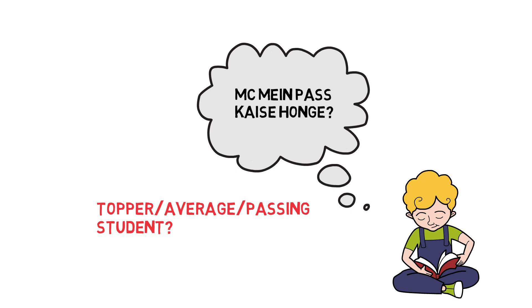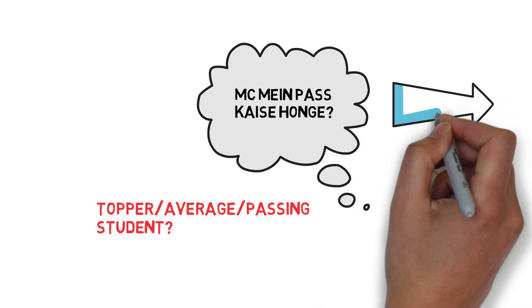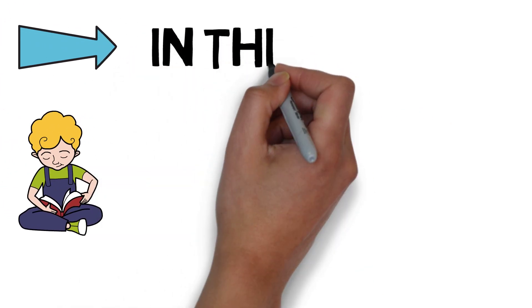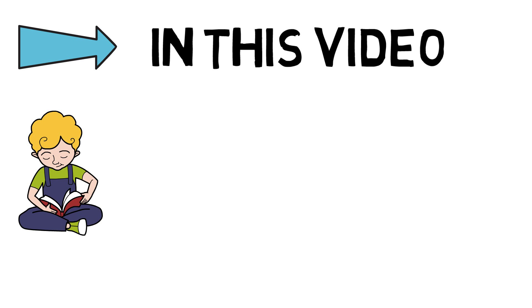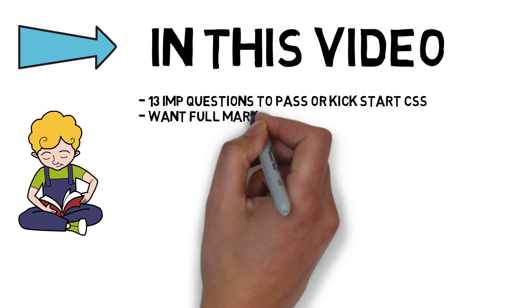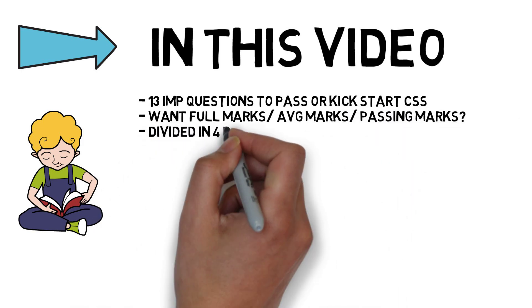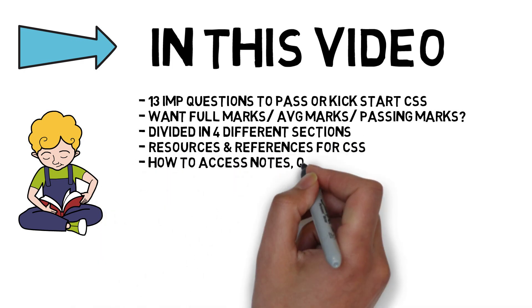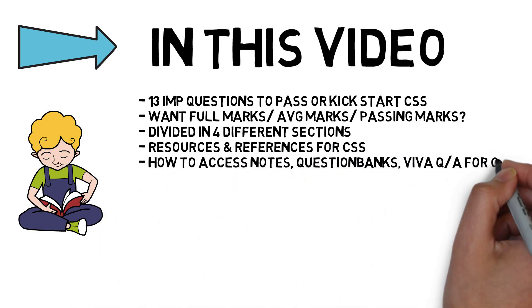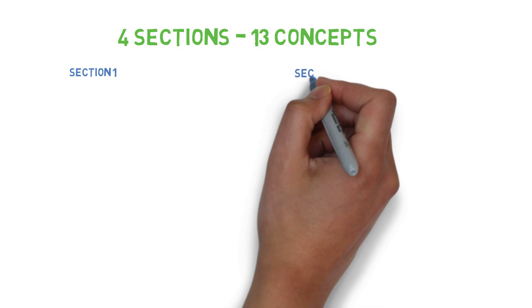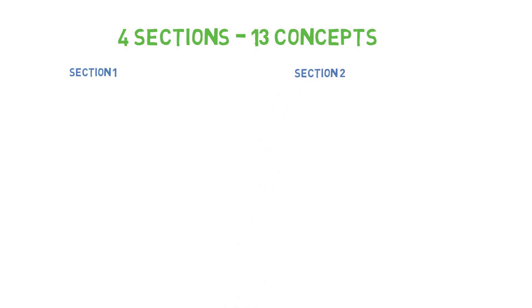What we'll do is discuss the passing questions first. I have listed 13 questions, and after that we'll check out how you can prepare for average marks, topper marks, or full marks — what you can get from the question bank and solutions. Currently, let's talk about the 13 important questions I've collected for you. I've divided them into four sections, and of course section one gets the highest priority.